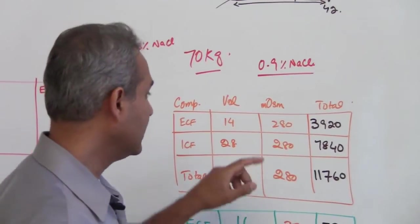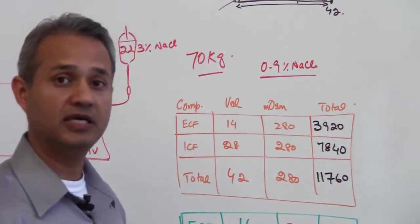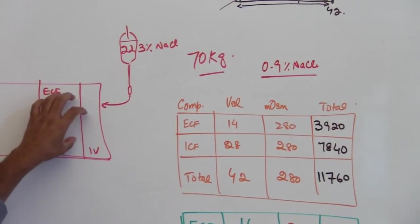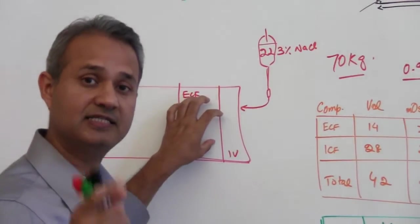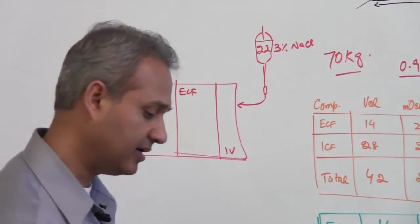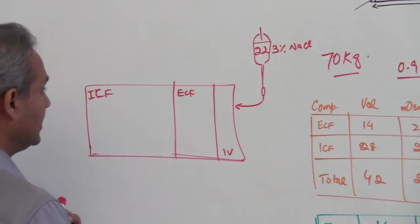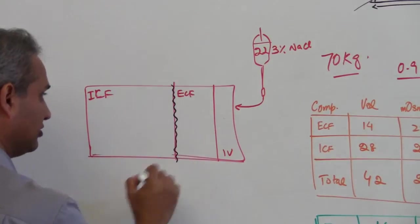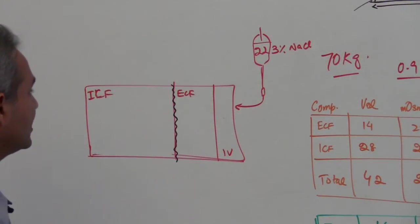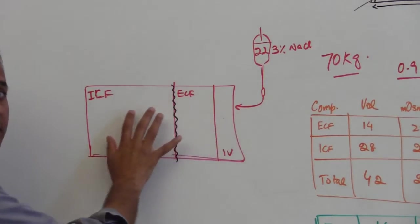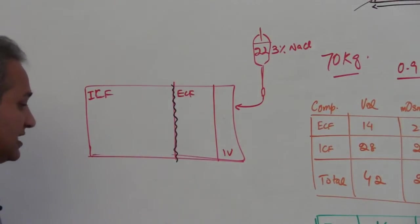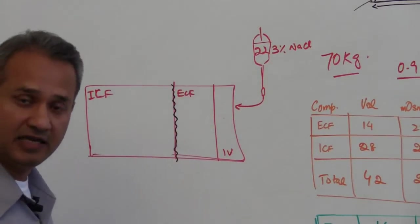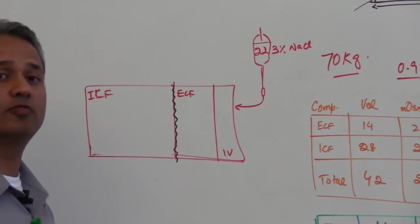Now remember this thing, this osmolarity is going to be equal in intracellular fluid and extracellular fluid. That is the point of all of these lectures that we should understand that the cell membrane which sits between the extracellular fluid and intracellular fluid, this cell membrane is semi permeable membrane and it would allow water to move easily while solutes cannot move that easily.